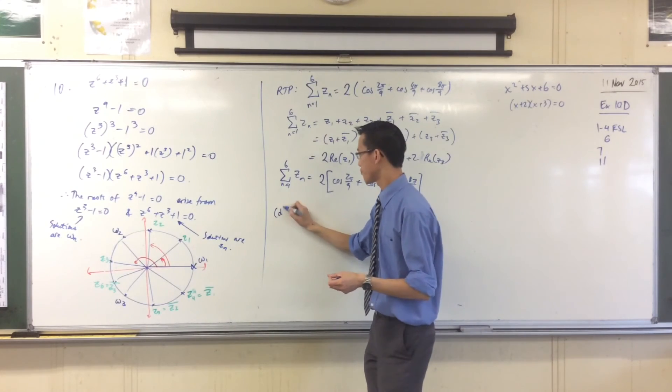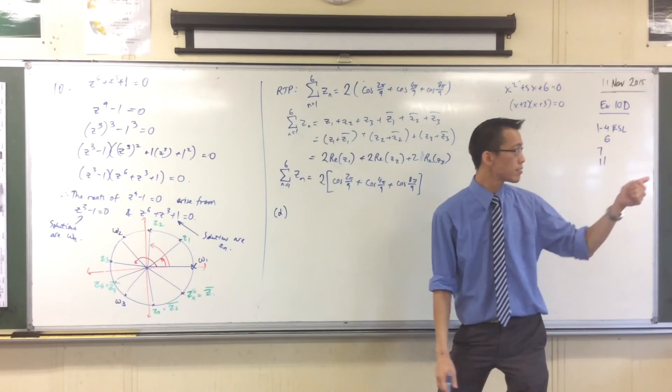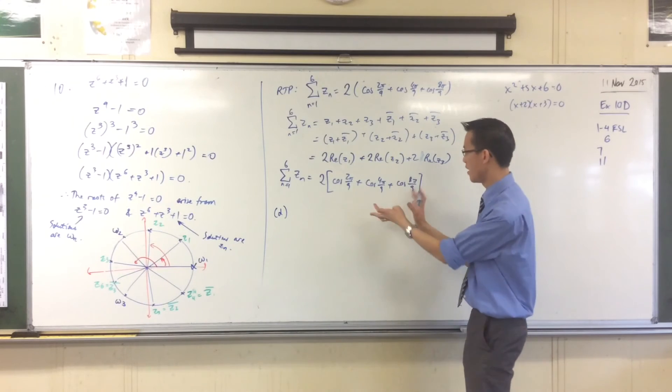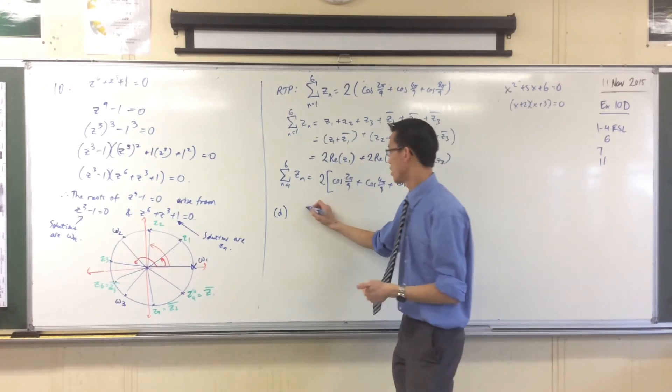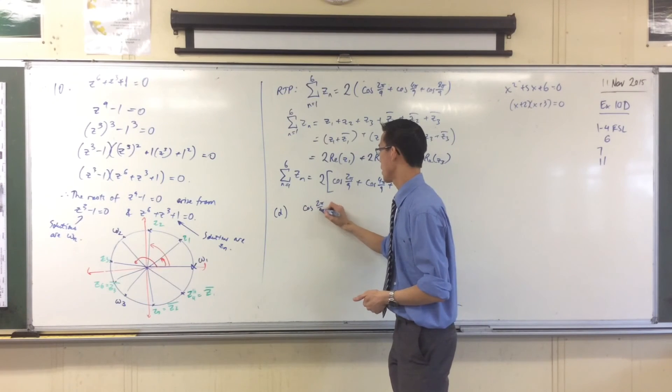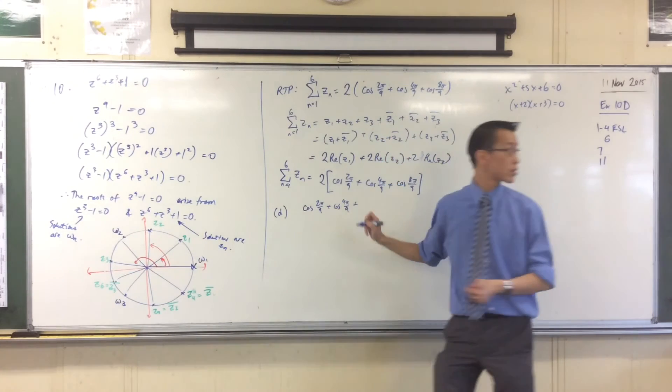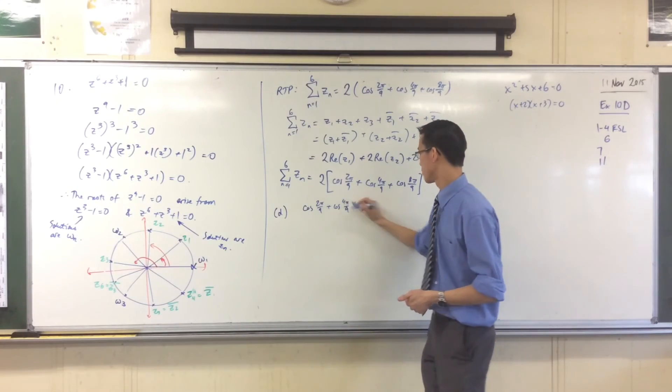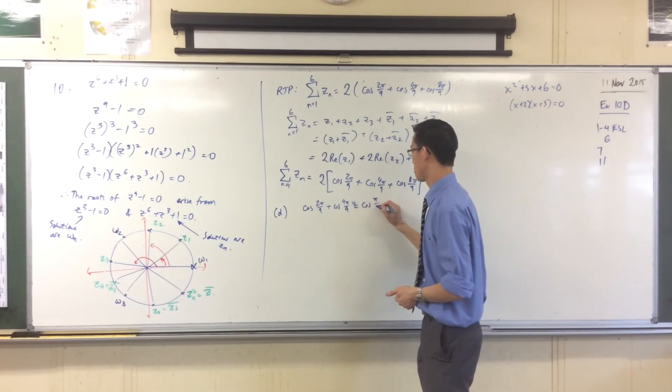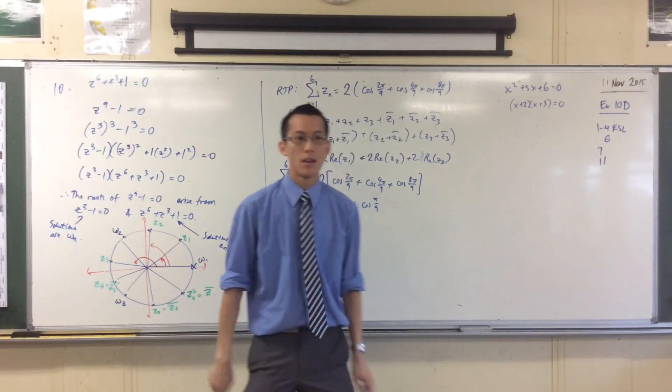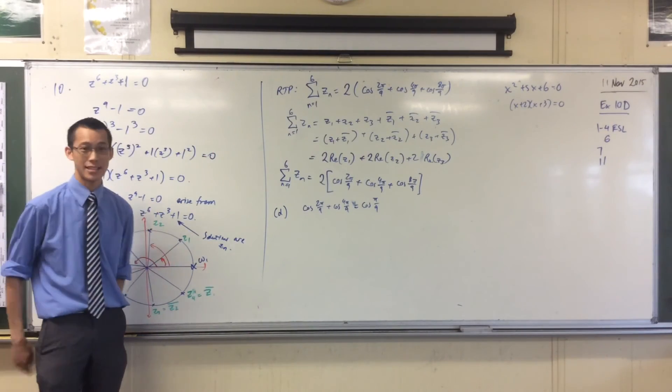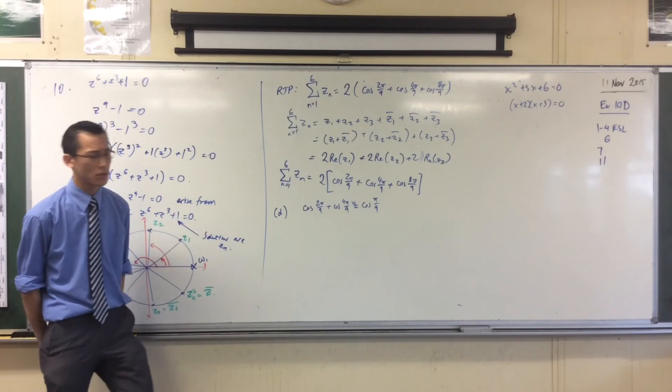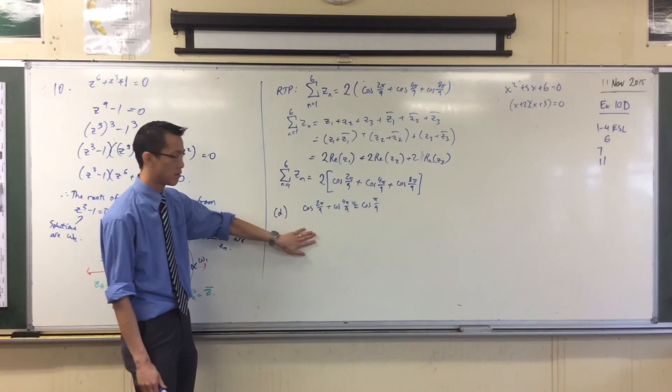what I'm required to prove is this result, which is almost, it's almost this result, isn't it? But it's not quite. This is what they want. They want cos 2π on 9 plus cos 4π on 9 plus, sorry, equals cos π on 9. So I pause, I look at this, and I say, especially because it says hence, I say, what connection do I see between this guy and this guy?